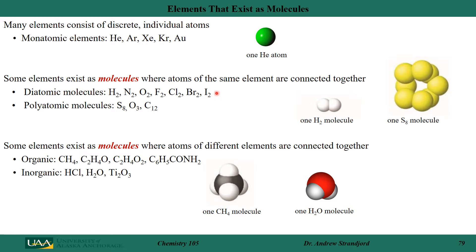There are other examples of diatomic molecules of the same element: hydrogen, nitrogen, oxygen, fluorine, chlorine, bromine, and iodine all exist as diatomic molecules. S₈ is a polyatomic molecule. Ozone, O₃, exists with three oxygen atoms bound together — so you can see there are two different types of molecules for oxygen.